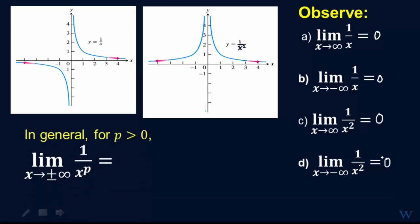So in general, what do we have? We have that as long as p is positive, make sure that p is positive, then the limit of 1 over x to the p as x goes to either plus or minus infinity is equal to 0.